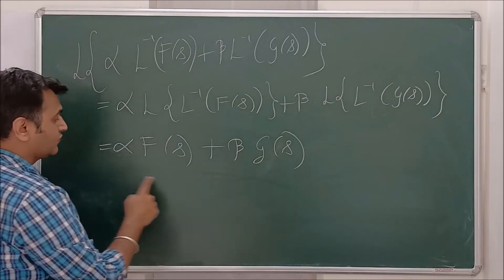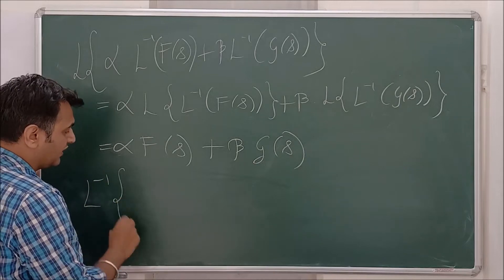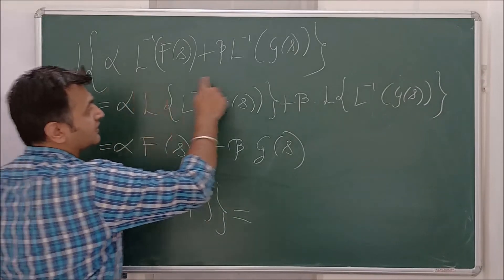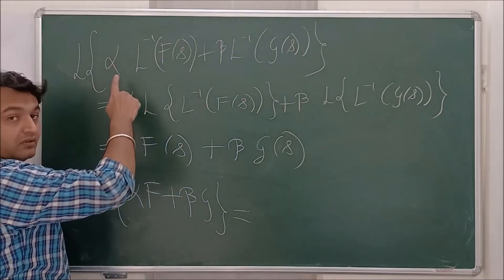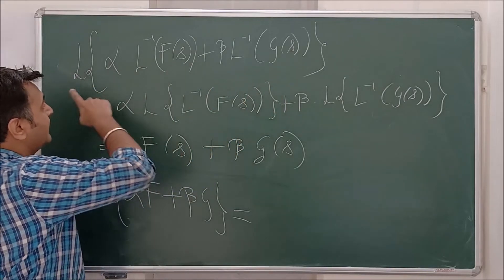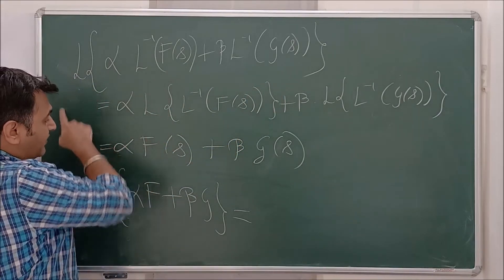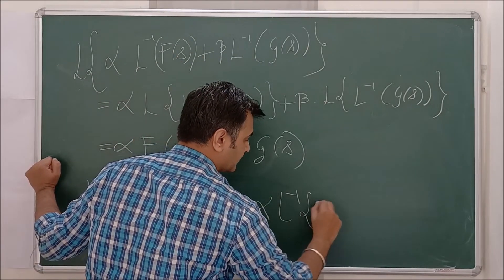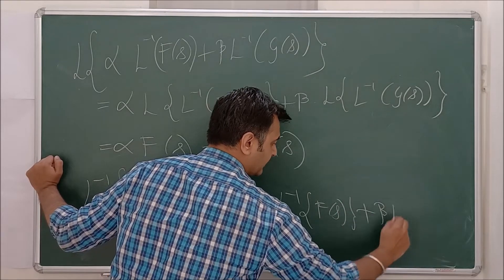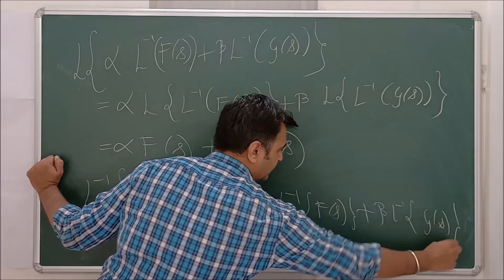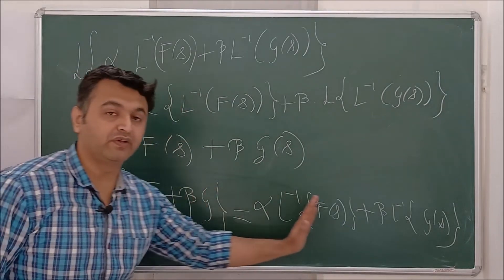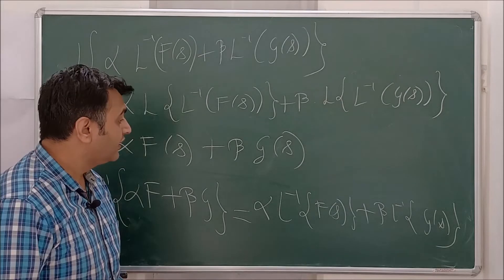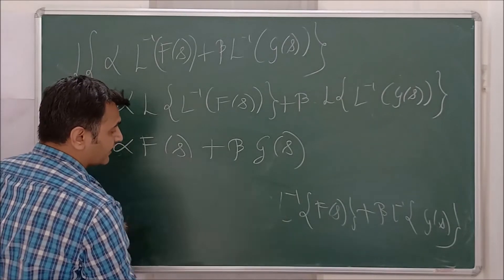So we get that Laplace of this quantity equals alpha·F(s) plus beta·G(s). Therefore, Laplace inverse of alpha·F(s) plus beta·G(s) is nothing but alpha times Laplace inverse of F(s) plus beta times Laplace inverse of G(s). That's what we proved — Laplace inverse is linear in nature.